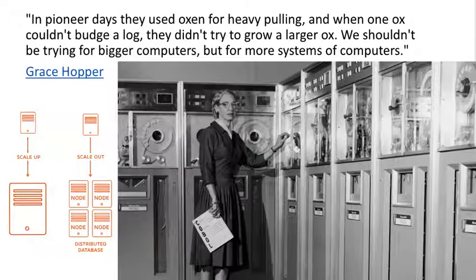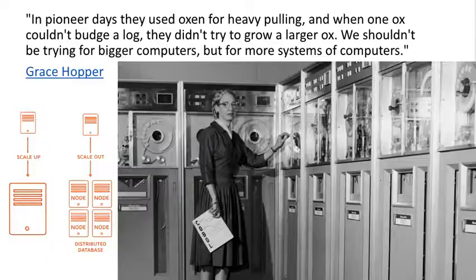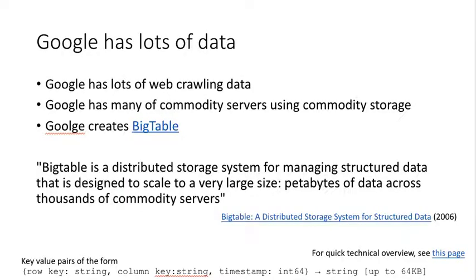Grace Hopper has a quote that rather than making larger oxen we should just have more of them. This is the idea of scaling out by getting a bunch of computers rather than making one really big computer. Google did this by creating BigTable — their approach to using many servers in a data center, spreading data across those servers, and running computations against it.